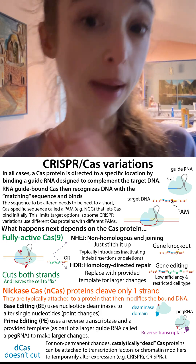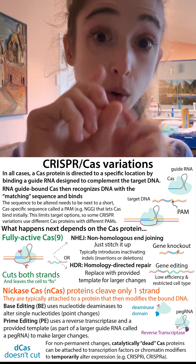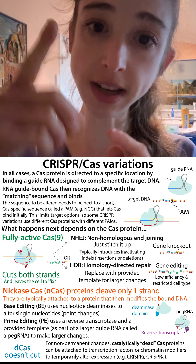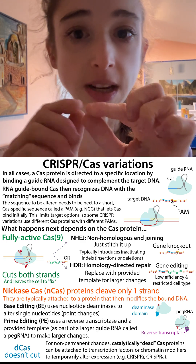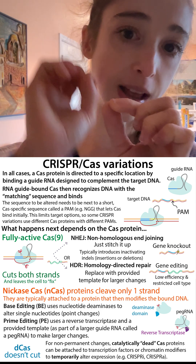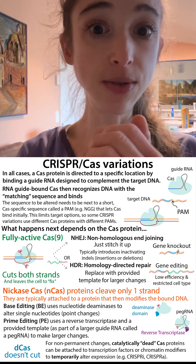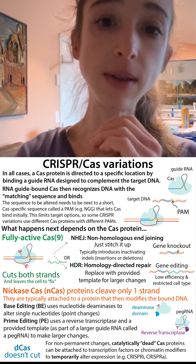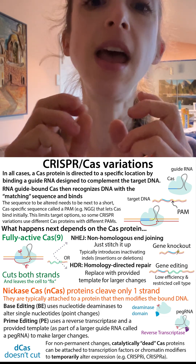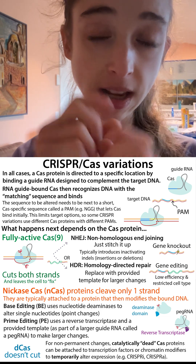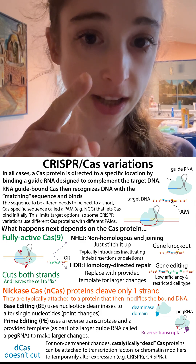Base editing is where you make a specific nucleotide change — you only change one letter of the DNA. This is done by having a Cas protein associated with another protein that modifies a DNA letter, tricking the cell into thinking it's a different letter. When the cells replicate or repair the DNA, they change the nucleotide, giving you a single letter change.